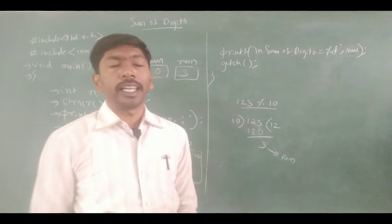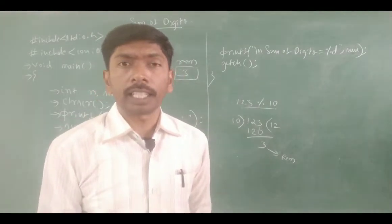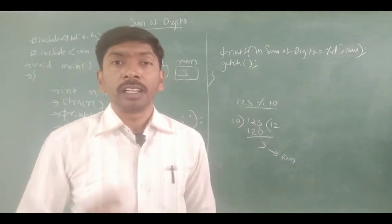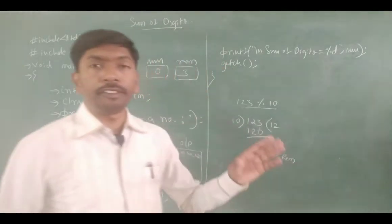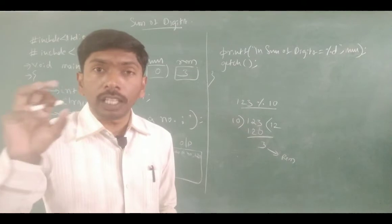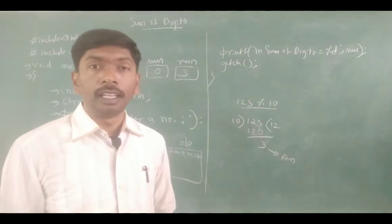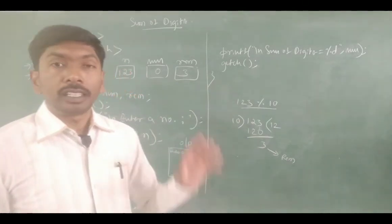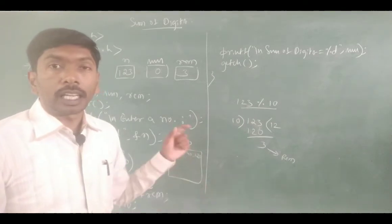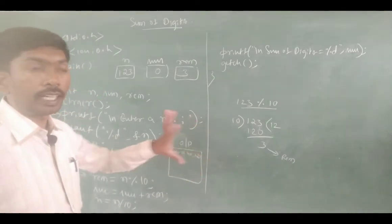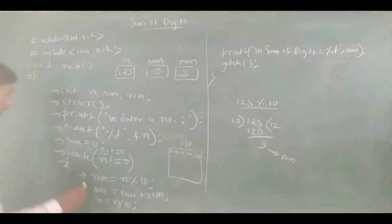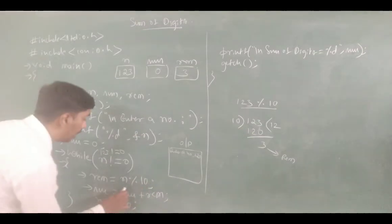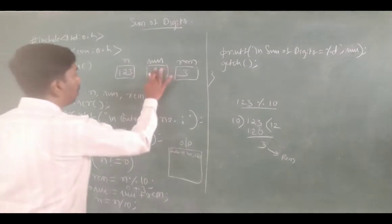The concept is that any number which is divisible by 10, the remainder must be the last digit. For example, if you divide 455 by 10, the remainder is 5 — the last digit. Any number divisible by 10 gives the last digit as the remainder. So for n=123, 123 mod 10 gives remainder 3. Sum is 0 plus 3, which equals 3, stored in sum.